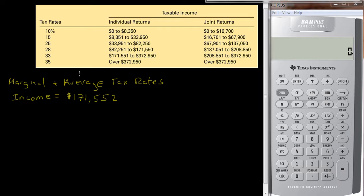So I have this example here where someone has income, and let's do an individual return, and they have an income of $171,552. Let's figure out how much tax they have to pay. The first amount they have to pay is on the first $8,350, so $8,350, they get taxed at 10%. So that's pretty easy to do in our head, so that's $835.